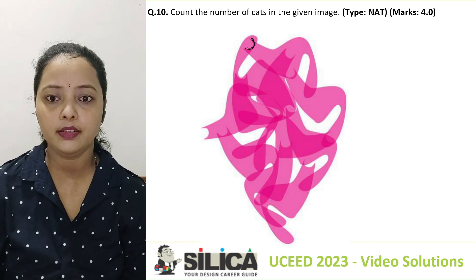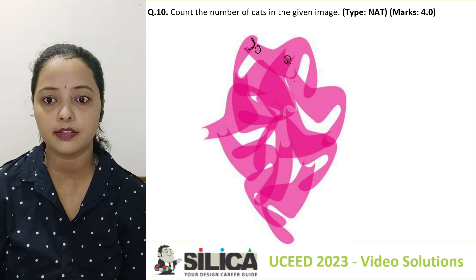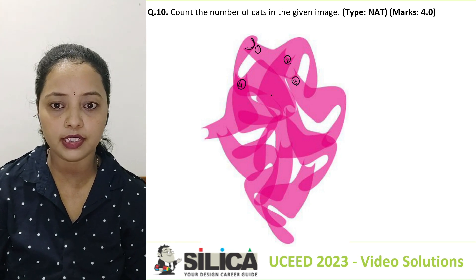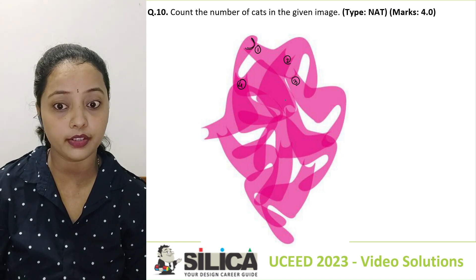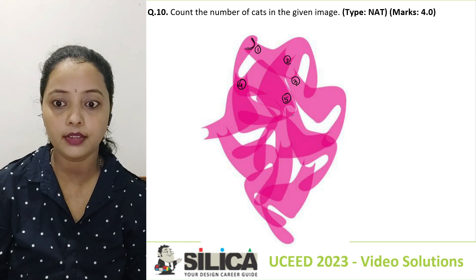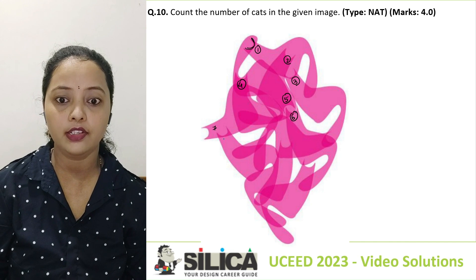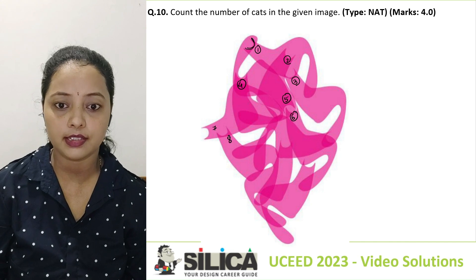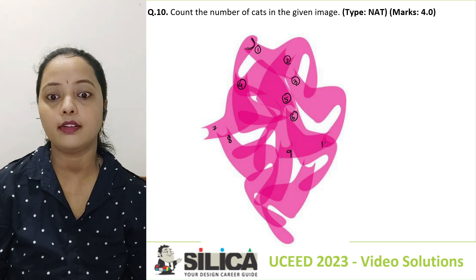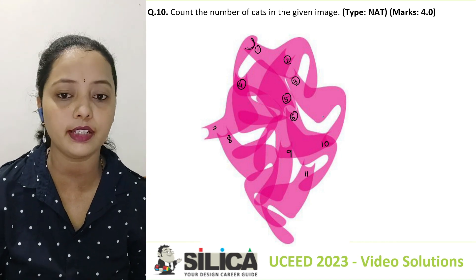So this is 1, this guy is 2 — observe carefully — this is 3rd, 4th. If I go down, this cat is inverted, so 5. Then this is the 6th one, coming down 7, this is 8, this is 9. I see another structure here — 10, and finally at the bottom, that's the 11th cat.